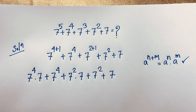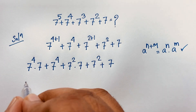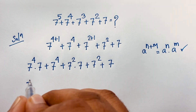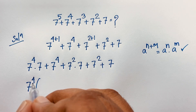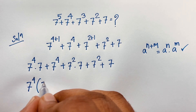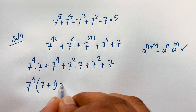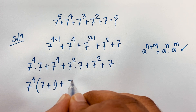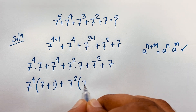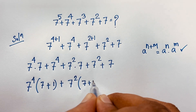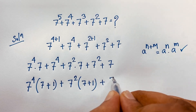Now at this moment, 7 to the power 4 is common. If I take 7 to the power 4 as common, then you can see here this divided by this it will be 7, and this divided by this it will be 1. Plus, here 7 to the power 2 is common, so it will be 7 plus 1 — this divided by this it will be 1 plus 7.